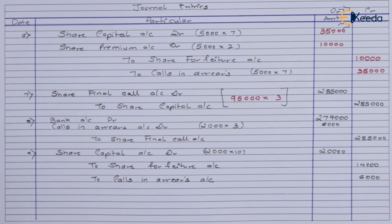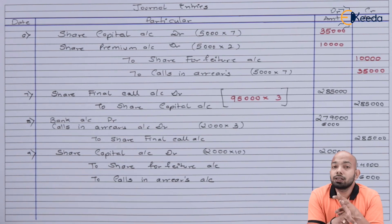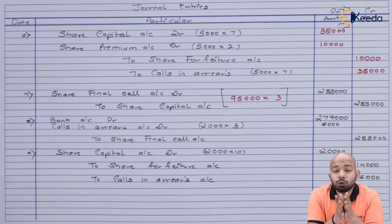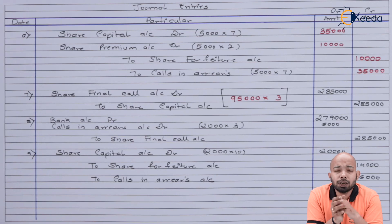That gives us the balancing figure of the Share Forfeiture Account. This is how forfeiture entries are passed whenever share forfeiture involves premium or oversubscription. In this illustration we covered oversubscription, pro-rata, securities premium being cancelled or not paid, and share forfeiture — all combined. Thank you for watching; stay tuned with Ikeda and keep subscribing.